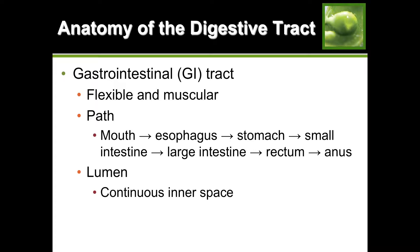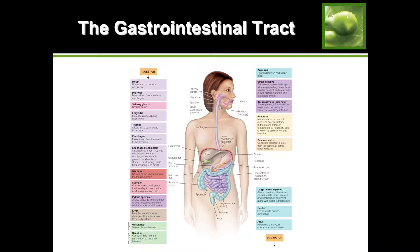Then you have the rectum and then the anus. Your GI tract is a continuous inner space - you could open it from the mouth to the anus; it's just one continuous inner space called a lumen. Here's your GI tract diagram showing what happens with digestion through each segment - this is a good review for the entire chapter.